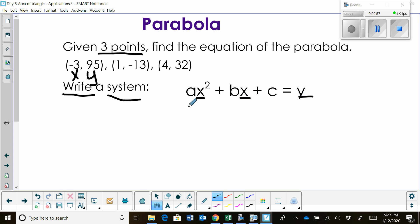And 95 right here for y. So we're going to have a times the quantity (-3)², plus b times the quantity (-3), plus c, is equal to y. Well, y in this case is 95, so we're going to put a 95 in here. Now, let's clean that up just a little bit. That's going to give us 9a - 3b + c = 95.